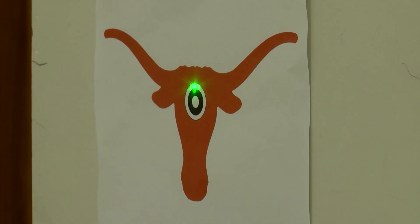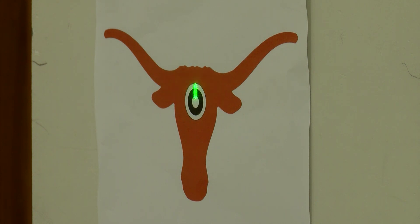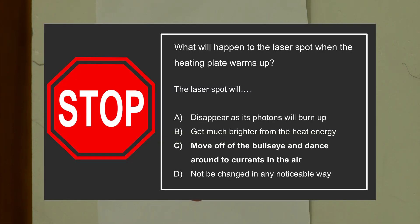The hot plate is now quite warm. Note that the laser spot is at a slightly different location. This is due to refraction as the light bends as it enters and leaves the warmer, lower density air. Note that the spot dances around as well — this is due to the convection currents in the air carrying away heat energy from the hot plate. If you answered C, that the laser pointer will move off the bullseye and dance around due to currents in the air, you're right.